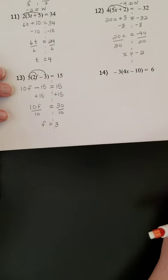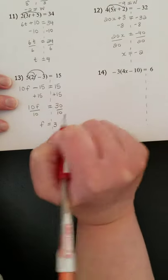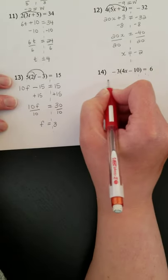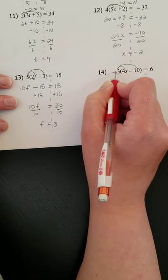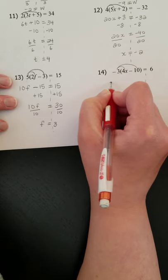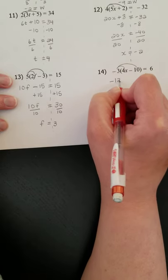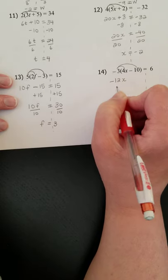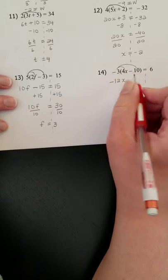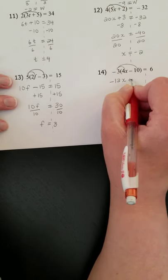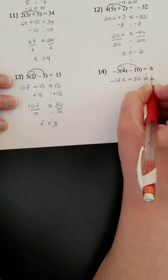Last one. Question number 14. This one's a little bit different because I have a negative 3 out front. That's the first one we've seen with a negative sign here. So I'm going to multiply, distribute in, making that rainbow. My first multiplication, I'm looking at signs. I have negative and positive. I know one of each makes a negative answer. Looking at numbers. 3 and 4 multiply to 12. And looking at variables. I have an X. The next multiplication, I have negative 3 and negative 10. So my signs, I look negative and negative. That's going to make a positive. 3 times 10 is 30. And there's no variables with those. Then I have equals 6.